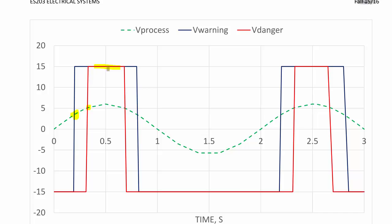At that point, both LEDs are on because V_warning and V_danger are both at positive 15 volts until the process voltage falls back below 5 volts, at which point V_danger turns off. When the process voltage falls below 3.5 volts, V_warning also turns off and both LEDs are off. So: threshold exceeds 3.5V → first LED on; exceeds 5V → second LED on; both can be on or both off.